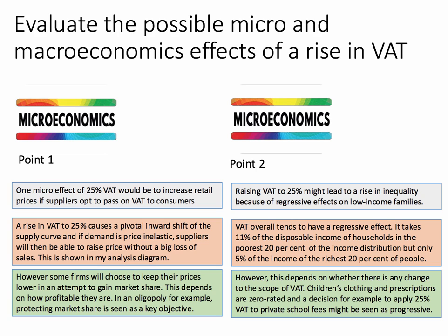However, as an evaluation argument, this effect depends on whether there's any change to the scope of VAT. At the moment, children's clothing, food, and prescriptions are not subject to VAT, so they would have little effect on those budgets. And indeed, if the Labour Party's proposal to apply VAT to private school fees was introduced, you could make a case for saying that's more progressive. So an increase in VAT on luxury items, however defined, could actually have a progressive effect on income inequality.